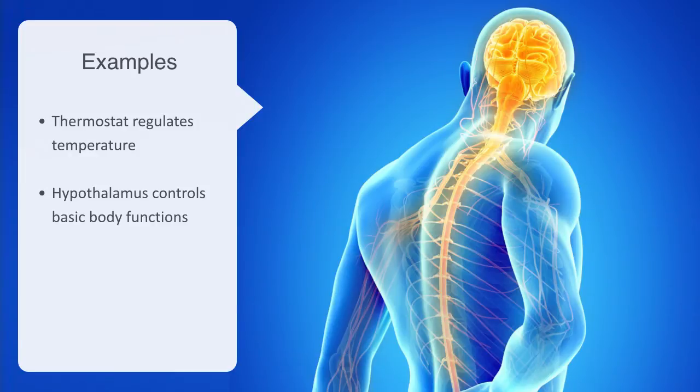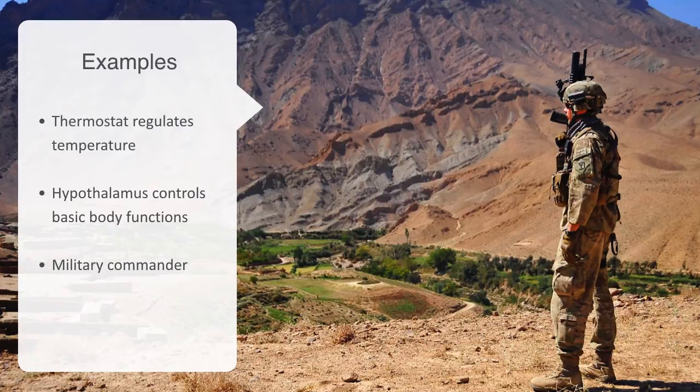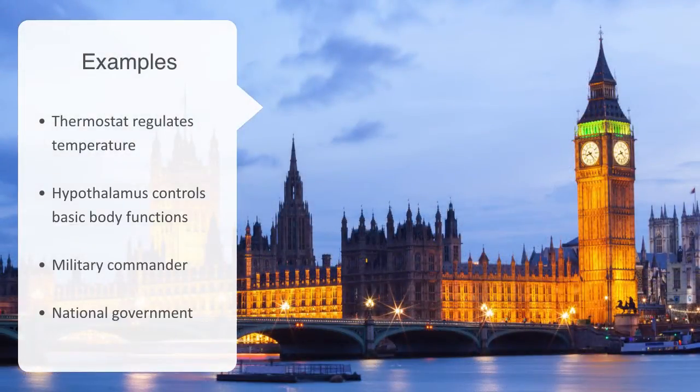The commander of a military unit is another example. He or she is given the position of supreme control within the organization, responsible for its maintenance and operation. A nation's government is another example of a control system, designed to maintain and develop the socio-economic system within a given jurisdiction.